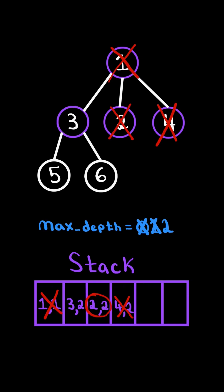We pop from the stack, and notice its depth is the same as max depth, so we don't update. Likewise, node 2 does not have any children, so we don't append to the stack. And we continue.